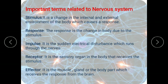Let us see some important terms related to the nervous system. Stimulus is the change in the internal and external environment of the body which causes a response. Response is the change in the body due to stimulus. Impulse is the sudden electrical disturbance which runs through the nerves. Receptor is the sensory organ in the body that receives the stimulus. Effector is the muscle, gland, or body part which receives the response from the brain.